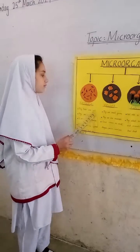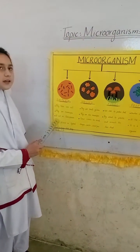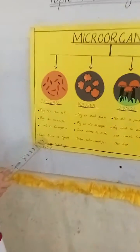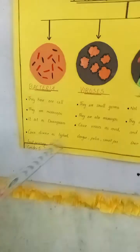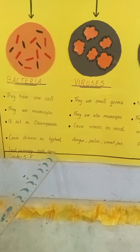Bacteria: they have one cell, they are microscopic, they act as decomposers, and they cause diseases such as food poisoning and decay.